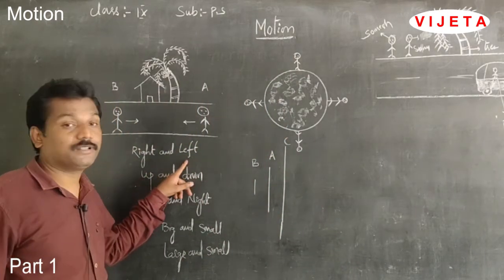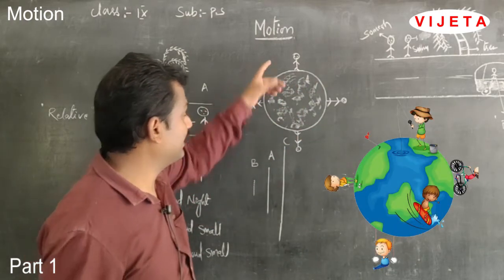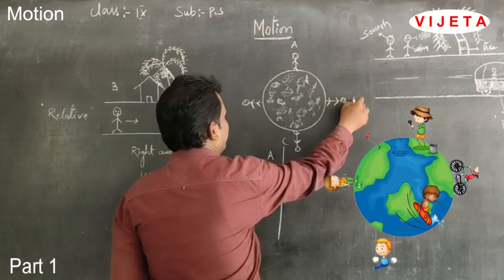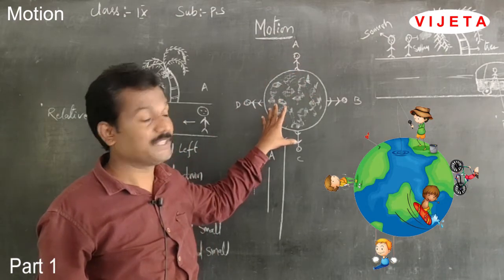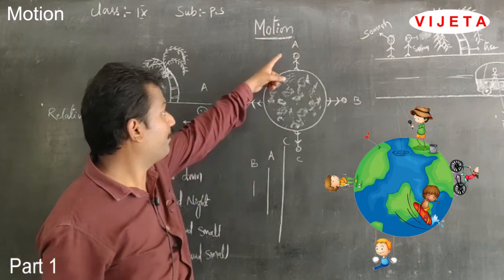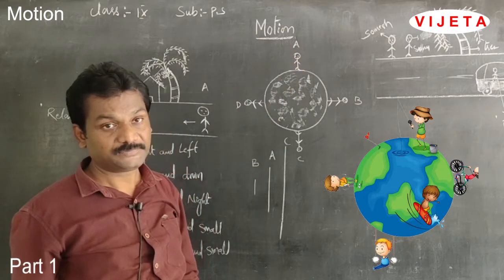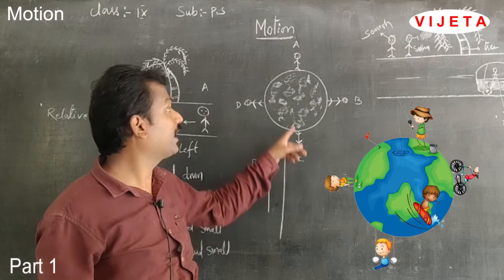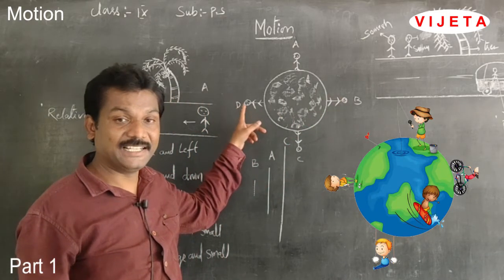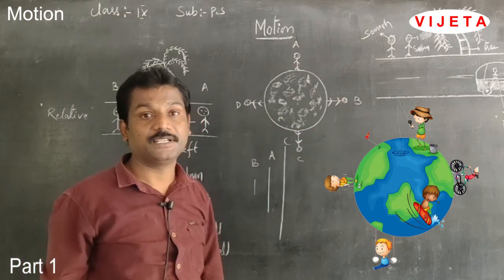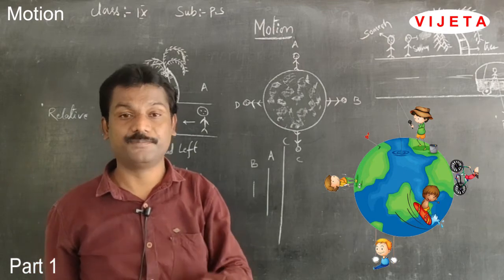Consider a globe with four persons A, B, C, and D on the sphere. Person A seems to be in the upper portion of the globe according to C, and C is also in the upper portion according to A. B is also in the upper portion with respect to D, and D is also upper with respect to B. We cannot decide whether it is up or down without a point of observation. Up and down are also relative.